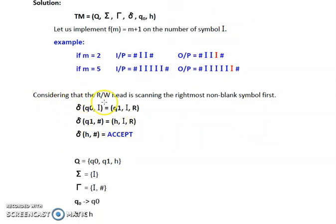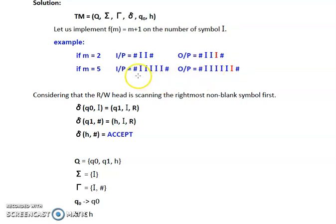Now considering that our read/write head is scanning the rightmost non-blank symbol first. So we are considering that in our input the read/write head is pointing to the rightmost non-blank symbol. If we observe the example carefully, to have an extra i we need to replace this particular hash by an i and then after this i we will include a hash again. That means the hash at the end of the input has to be replaced by an i in order to obtain one more i than the number of i's provided as the input.